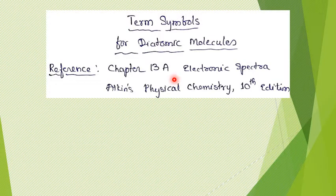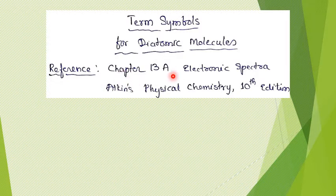This aspect is not available in all books, but definitely you can find it in Atkins Physical Chemistry, chapter 13A — electronic spectra. This part has been discussed there, so if you have any related information to consider, you can definitely refer to this.